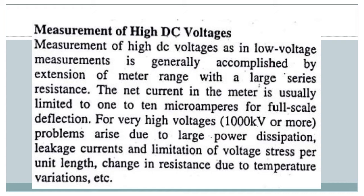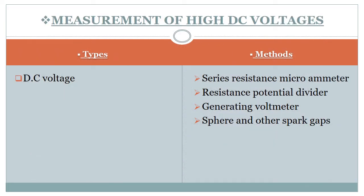For very high voltages, which means 1000 kV or more, problems arise due to large power dissipation, leakage currents, and limitations of voltage stress per unit length, as well as change in resistance due to temperature variations. These are a lot of issues that have to be addressed for high DC voltage measurement.